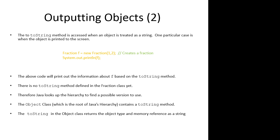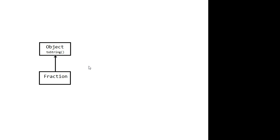Remember the very first slide said everything is an object? All classes you define in Java will resolve at some point to the object class — that is the root of the Java hierarchy. So when we run this chunk of code, we print out the object type and the memory reference.